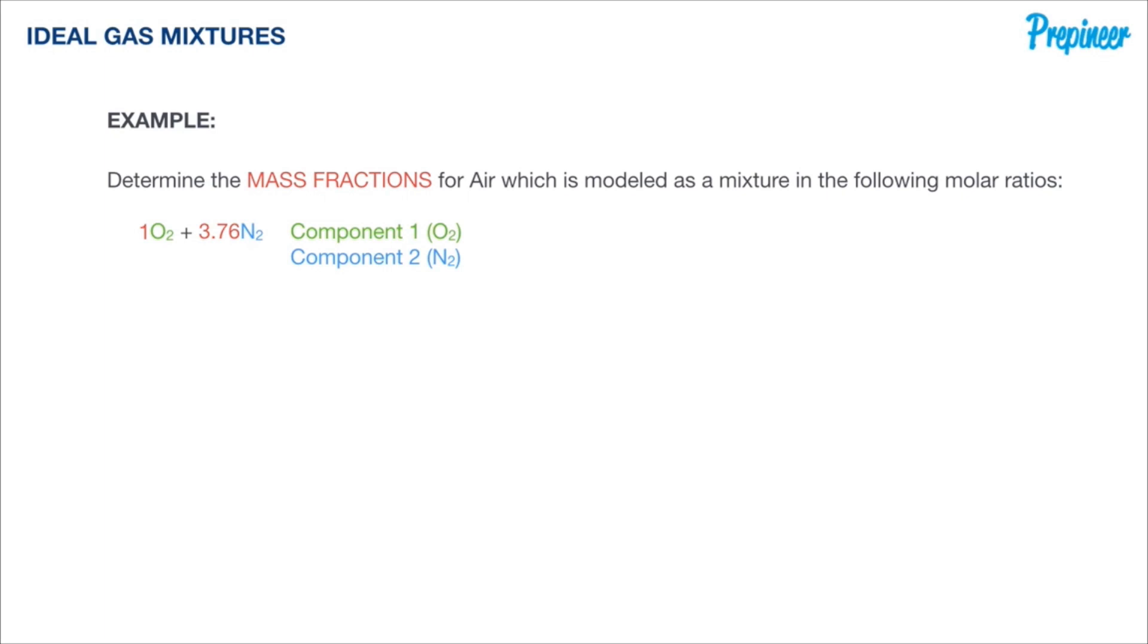Recall that the mass fraction of each individual component is represented by that formula right there, so we take the mass of the individual component and divide it by the mass of the complete mixture, the total mixture.